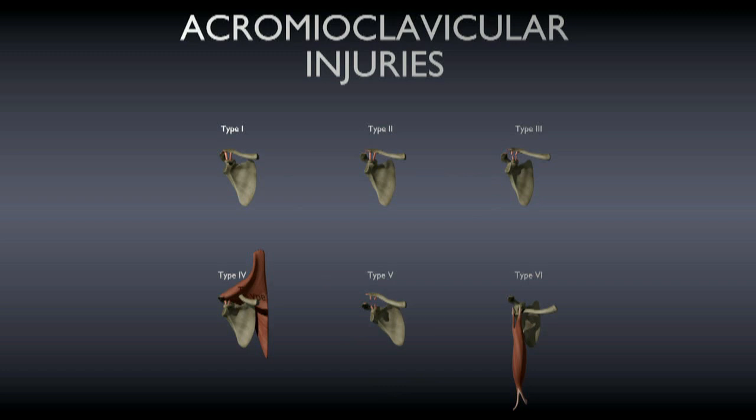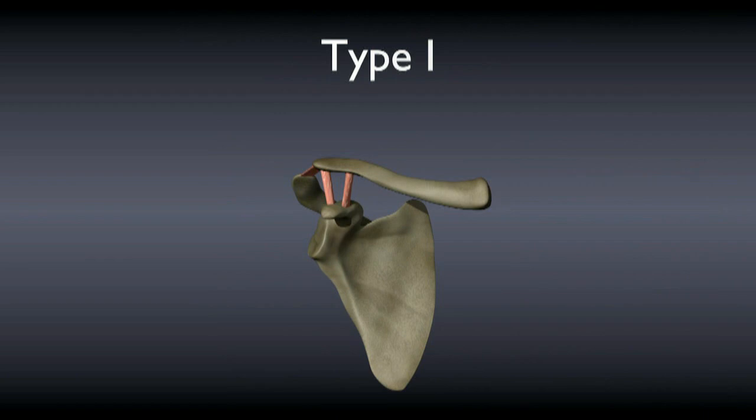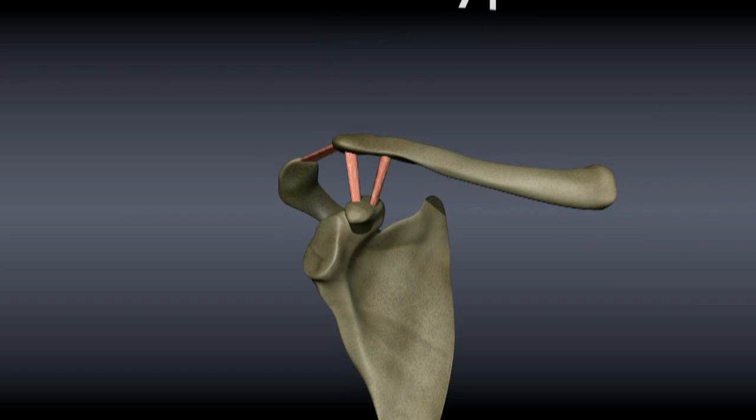Acromioclavicular joint injuries can be described using a simple classification system. This is a type 1 AC injury. The ligaments have been stretched but not completely torn.